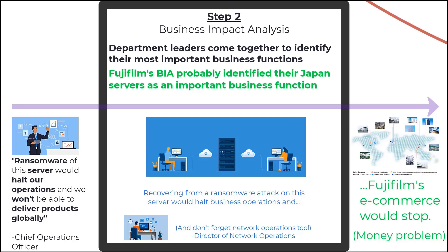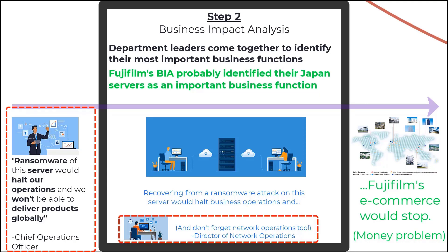So we have two high-level managers providing two different critical considerations during the Business Impact Analysis. The COO states that if the servers were being held for ransom, the business would come to a standstill and data would need to be restored to continue operations. The director of network operations says multiple networks would need to be shut down to reduce further disruption. We're getting two types of input in the BIA — a high-level one and a technical one — and both will need to be addressed in the recovery strategies stage.